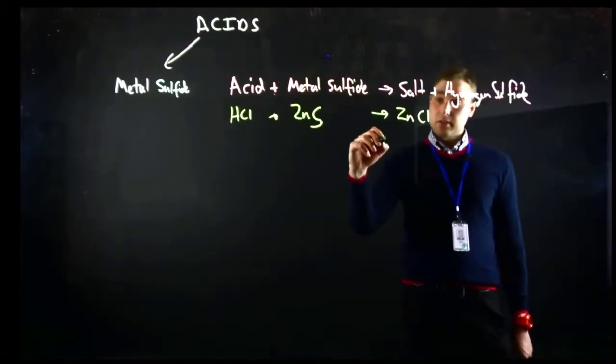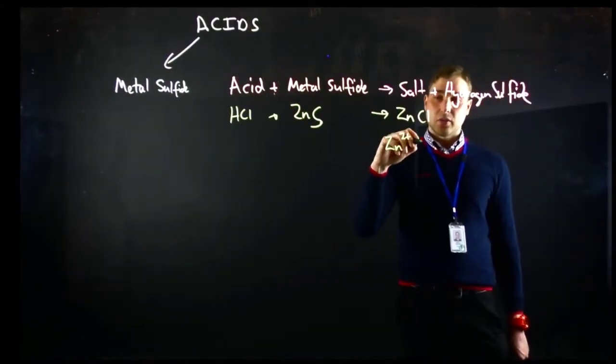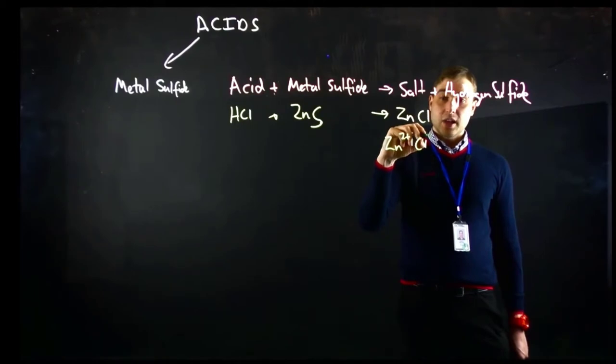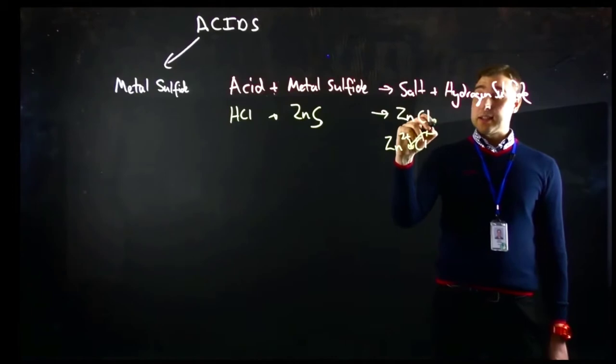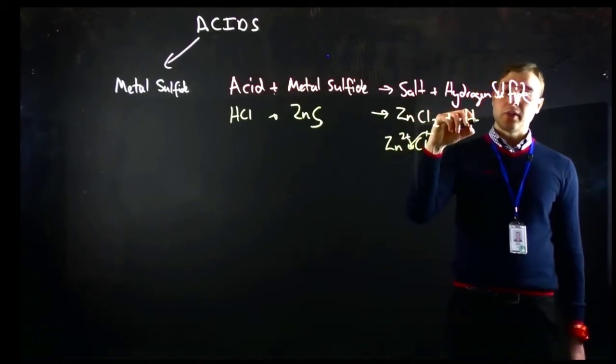Problem with that: zinc has a charge of 2+, chloride has a charge of 1-, so crisscross, ZnCl₂ plus hydrogen sulphide, H₂S.